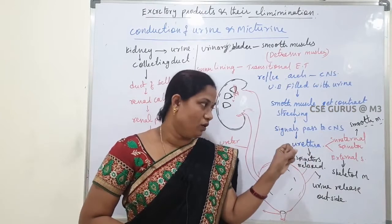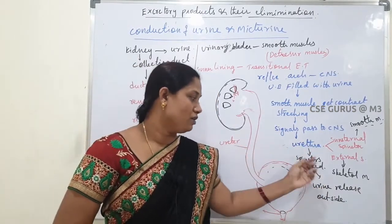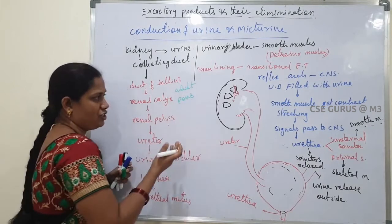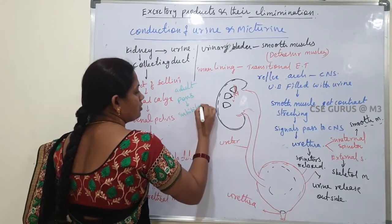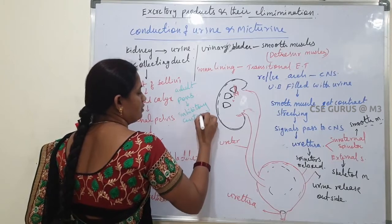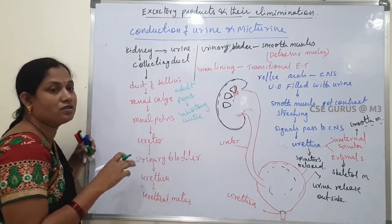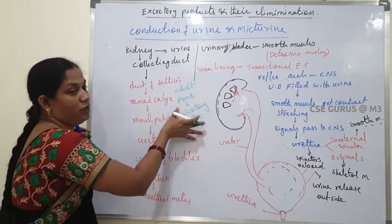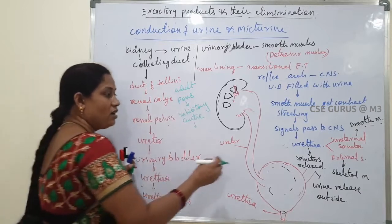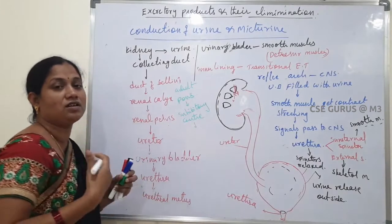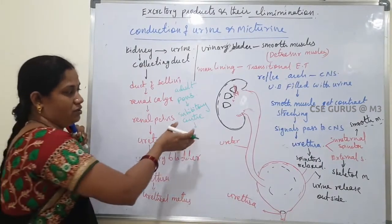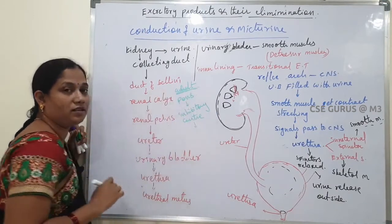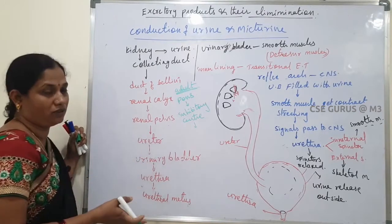These sphincters can open or relax, allowing urine to pass to the outside. In adults, the pons region of the brain has an inhibitory center, also called the delayed center. With the help of this center, adults can hold urine for a longer period, as it inhibits the opening of the sphincters and controls urination. This inhibitory center works in adults but not in infants.